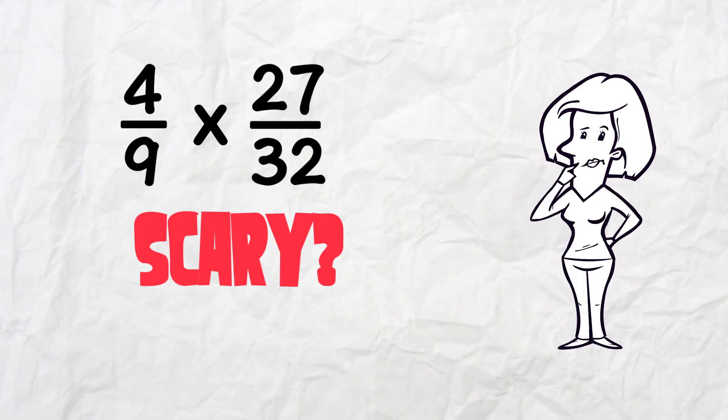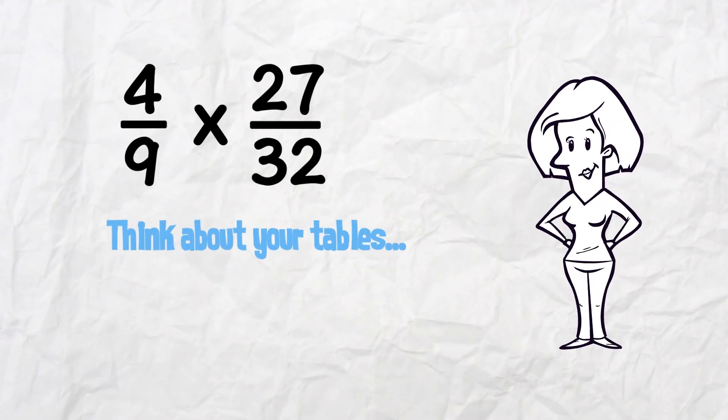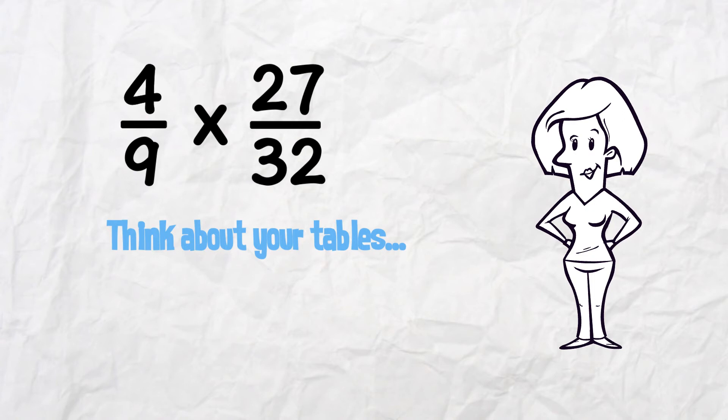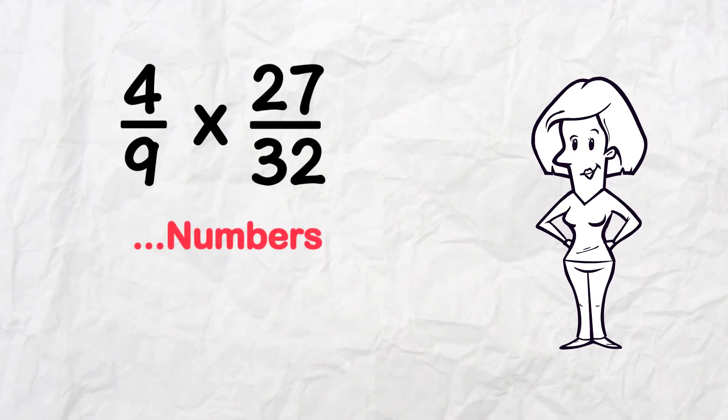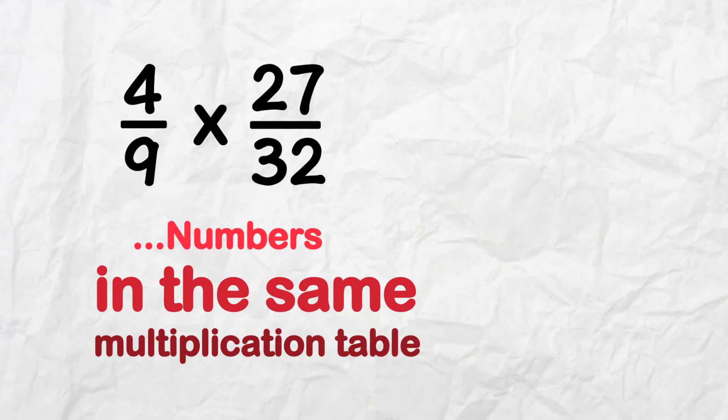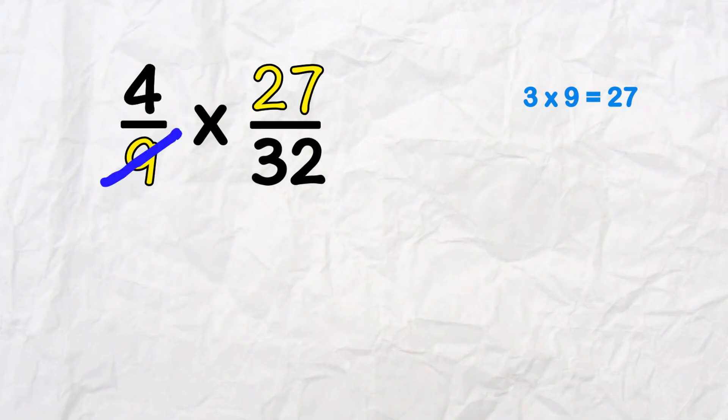But we can work smarter instead! Think about your tables. Look for a numerator and a denominator that fit together. We're looking for numbers that crop up in the same multiplication table. We've got 9 here and 27 here. 27 is in the 9 times table. Divide by 9. We get 1 here, and in 27 there's 3 nines.